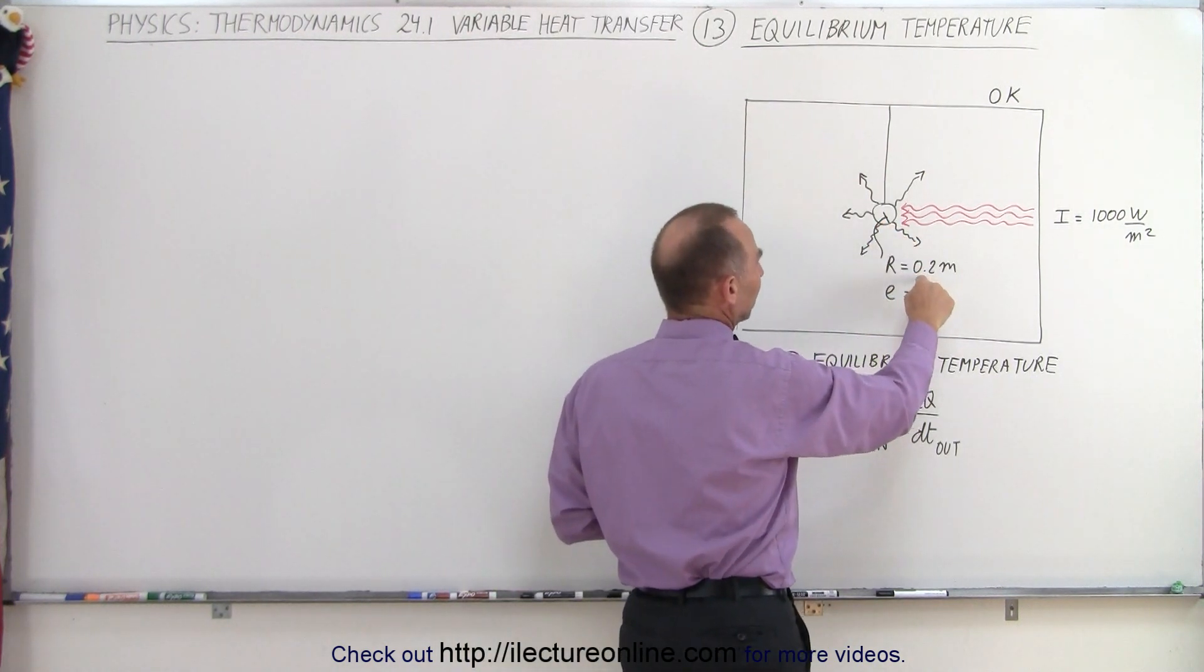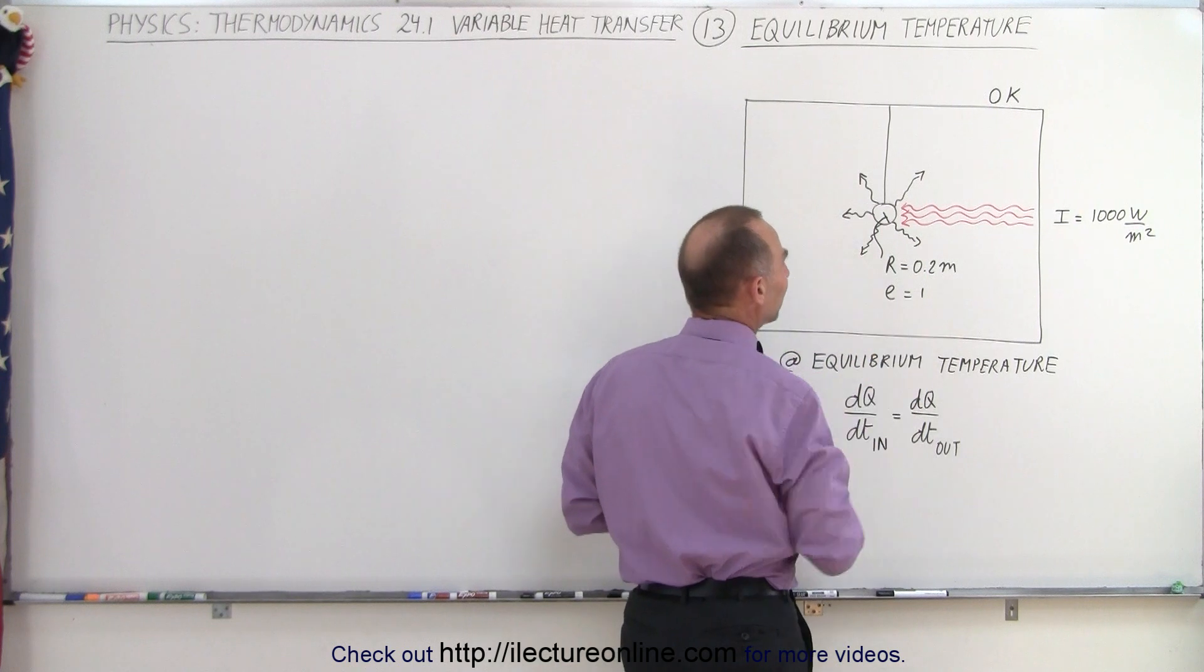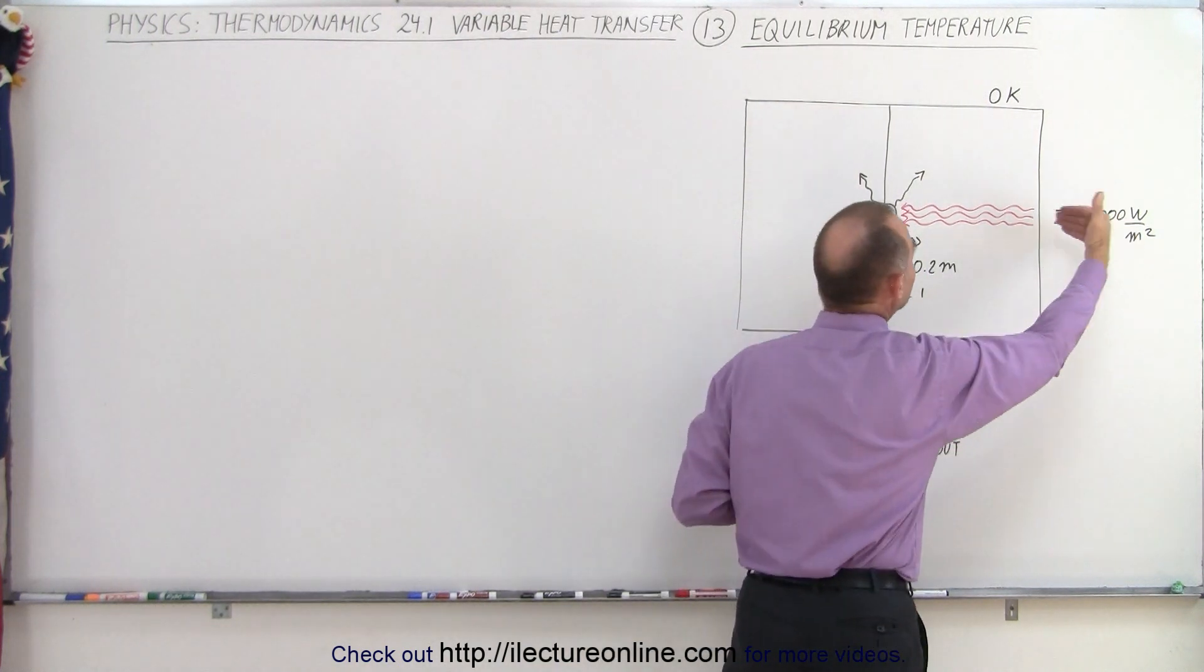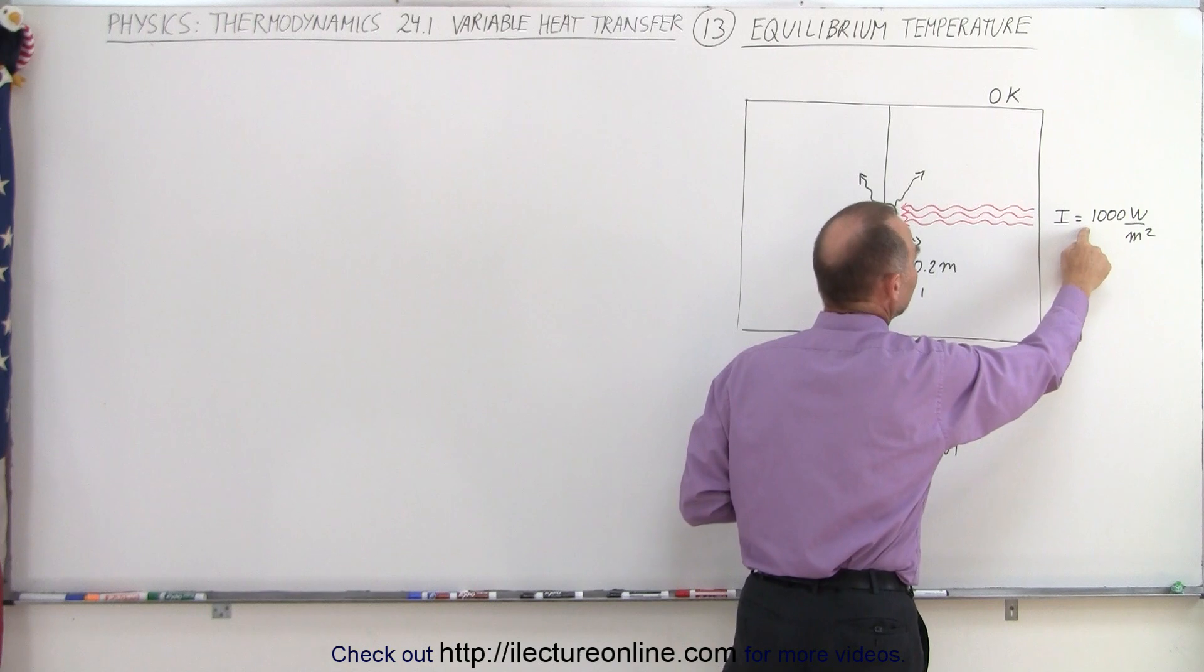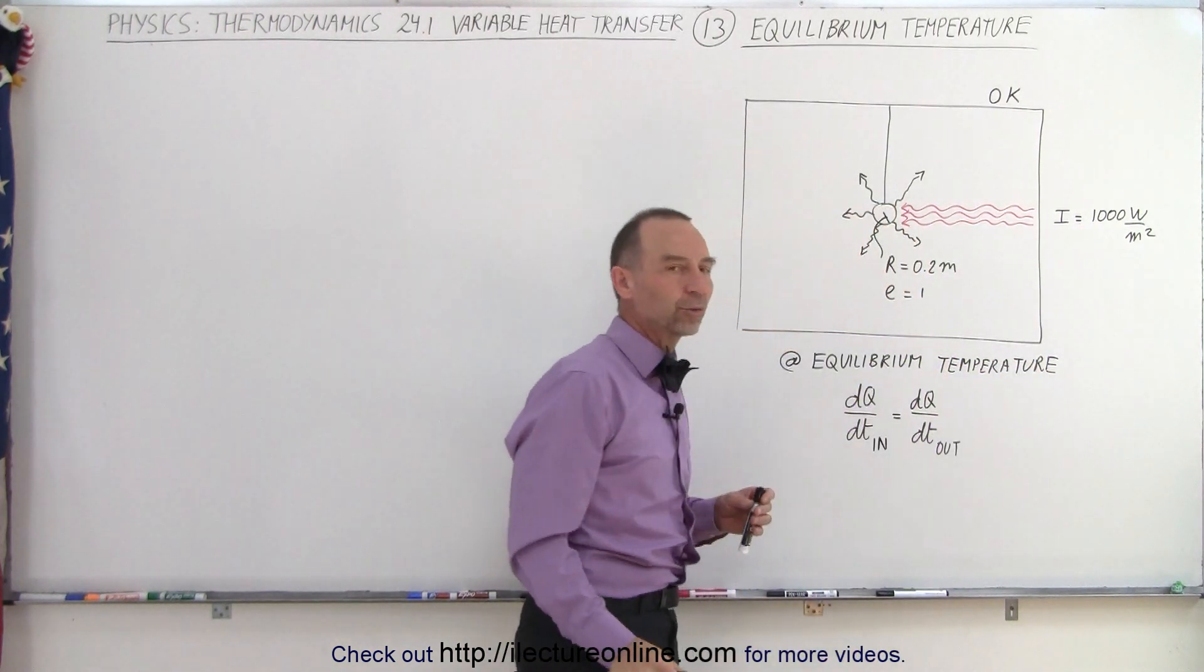Let's say that the radius of the object is 0.2 meters and the emissivity is equal to 1 and it's being radiated from one direction only at an intensity of 1,000 watts per square meter.